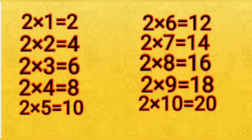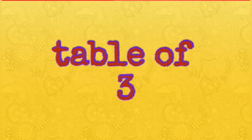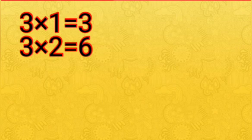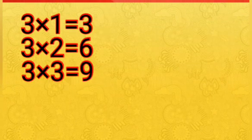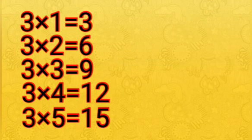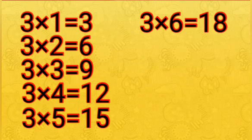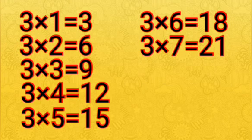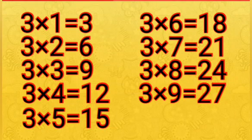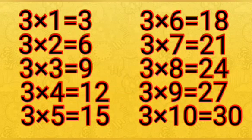2 nines are 18, 2 tens are 20. Table of 3. 3 ones are 3, 3 twos are 6, 3 threes are 9, 3 fours are 12, 3 fives are 15, 3 sixes are 18, 3 sevens are 21, 3 eights are 24, 3 nines are 27, 3 tens are 30.